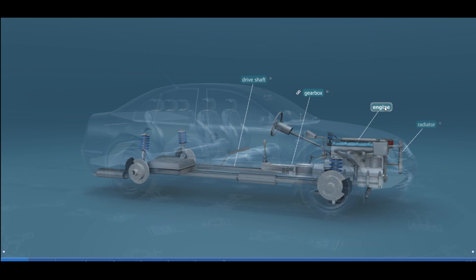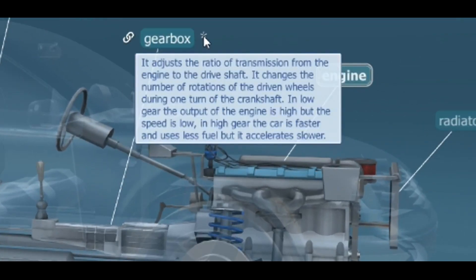The gearbox adjusts the ratio of transmission from the engine to the drive shaft. It changes the number of rotations of the driven wheels during one turn of the crankshaft. In low gear, the output of the engine is high but the speed is low. In high gear, the car is faster and uses less fuel, but it accelerates slower.